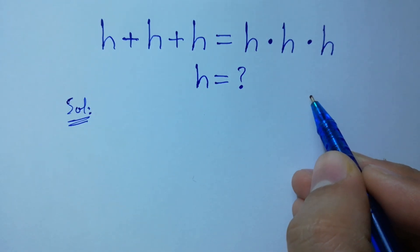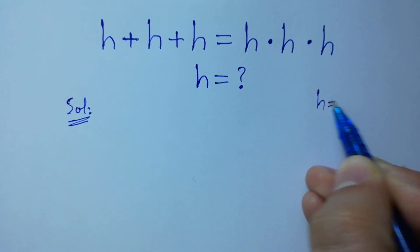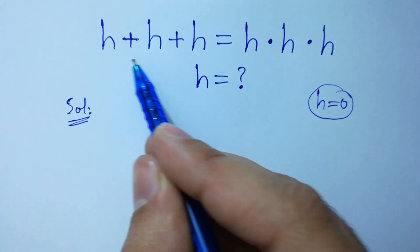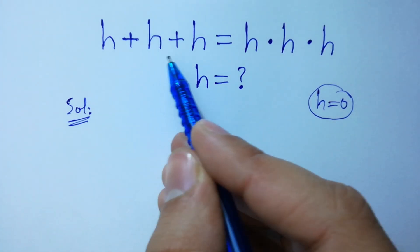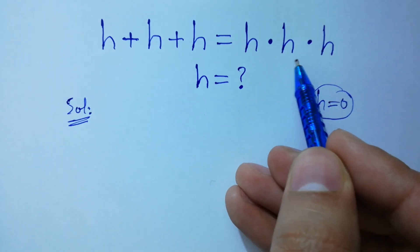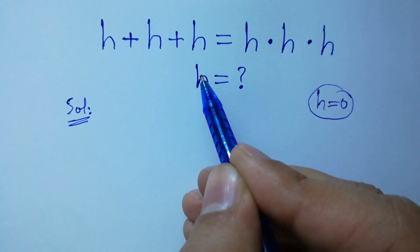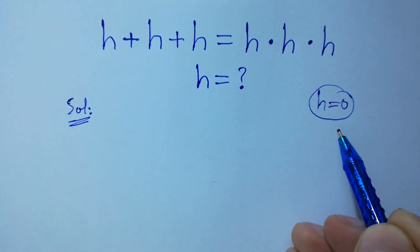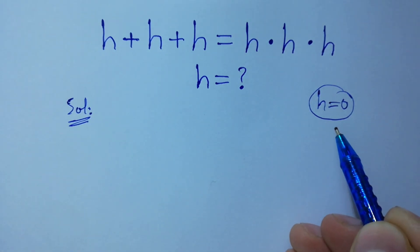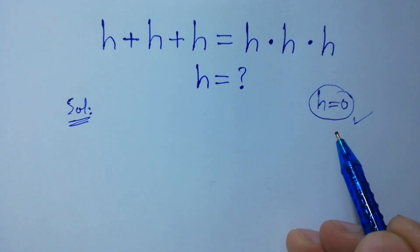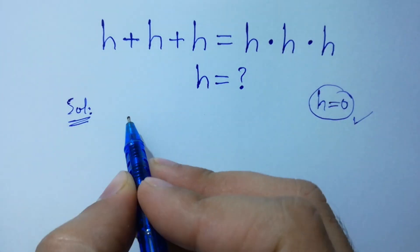If we put h equal to 0, we have 0 plus 0 plus 0 equal to 0 times 0 times 0, we get 0 equal to 0, which shows that the value of h is 0. But you should understand how h equals 0 — let's show this.